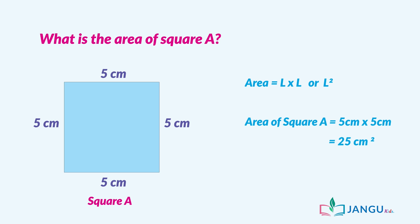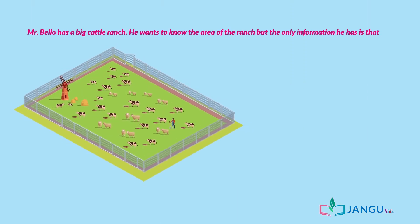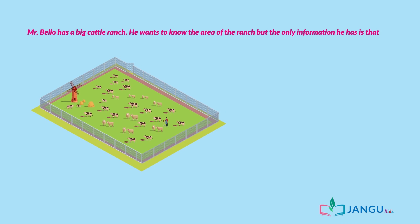Voila! It's quite easily done. Now let's attempt this question. Mr. Bello has a big cattle ranch. He wants to know the area of the ranch, but the only information he has is that the length of the ranch is 9 hectares, while its breadth is 6 hectares. What is the area of Mr. Bello's ranch?